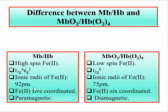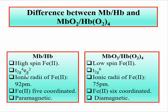Regarding ionic radii, in the case of deoxymyoglobin and deoxyhemoglobin, electrons occupy the EG orbital. The EG orbital is more repulsive compared to the T2G set in octahedral complexes. So when electrons occupy the EG set, the ionic radii increase due to greater repulsion as per crystal field theory. The ionic radii of the iron center in deoxymyoglobin or deoxyhemoglobin is 92 picometers.